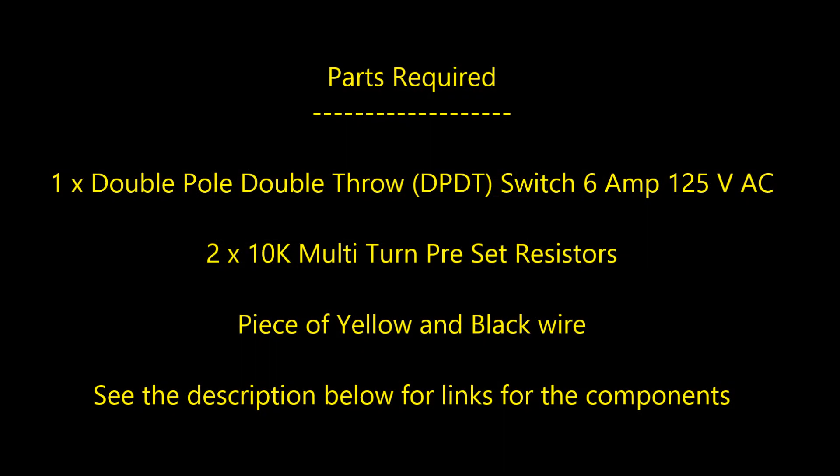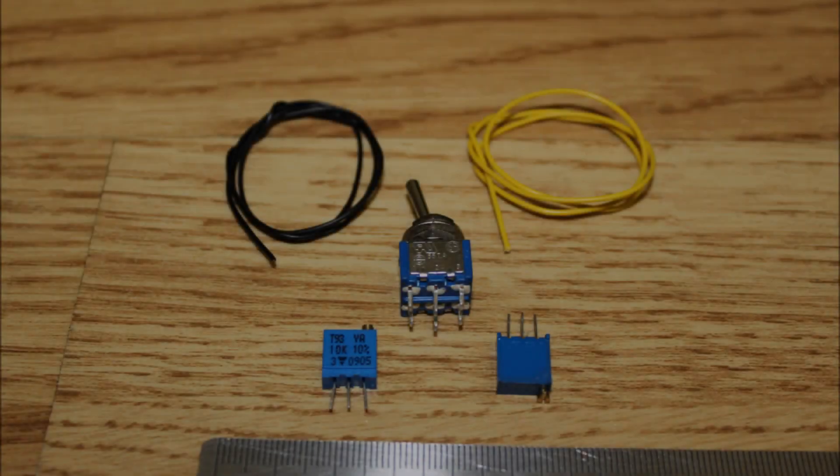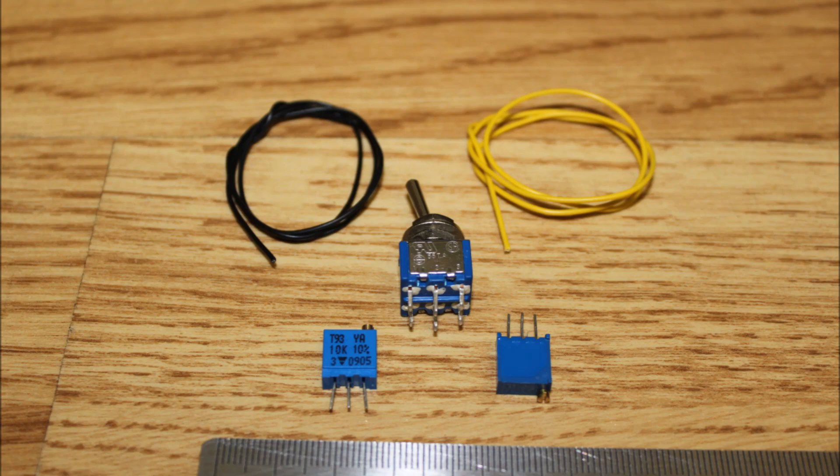Parts required will be one double pole double throw switch, 6 amps about 125 volts AC, 2 10k multi-turn preset resistors, a piece of yellow and black wire. See the description below for links to the components that we require.